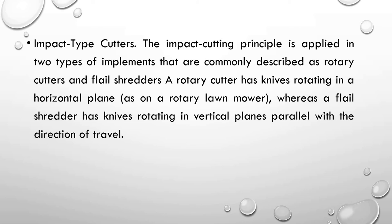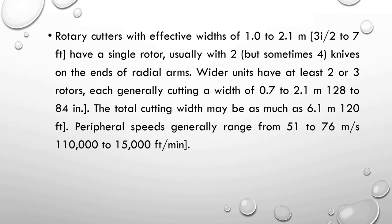A flail shredder has knives rotating in a vertical plane parallel with the direction of travel. Rotary cutters with effective width of 1.2 to 2.1 meters have a single rotor, usually with two knives on the end of radial arms. Wider units have at least two or three rotors, each with a cutting width of 0.7 to 2.1 meters. The total cutting width may be as much as 6.1 meters, and peripheral speed generally ranges from 51 to 76 meters per second.